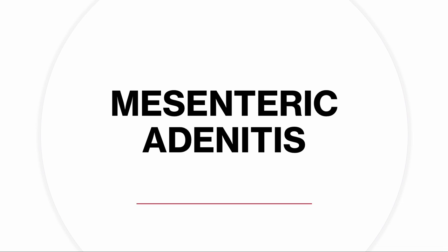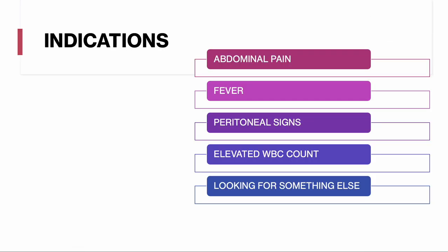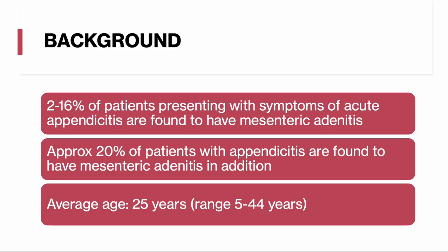Lastly, mesenteric adenitis. Patients present with abdominal pain, fever, peritoneal signs, and elevated white count. We are generally looking for something else — usually trying to rule out appendicitis — and then stumble across this diagnosis. About two to sixteen percent of patients who present with symptoms of acute appendicitis are found to have mesenteric adenitis, and about twenty percent of patients with appendicitis are also found to have mesenteric adenitis. The average age of these patients is about 25 years, the same range as those with appendicitis.